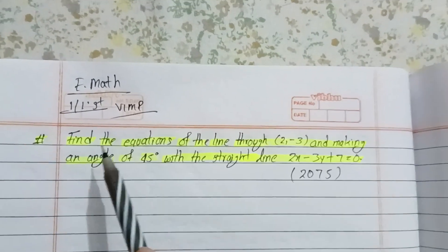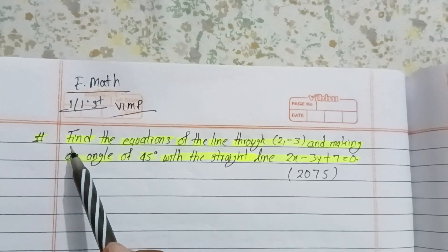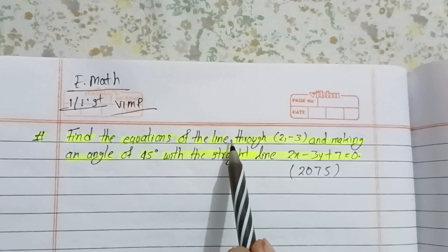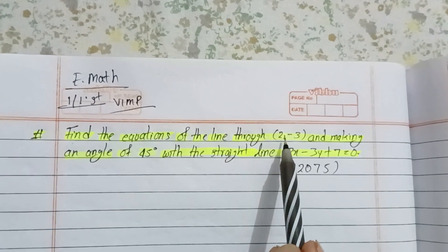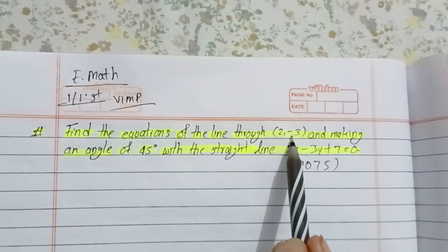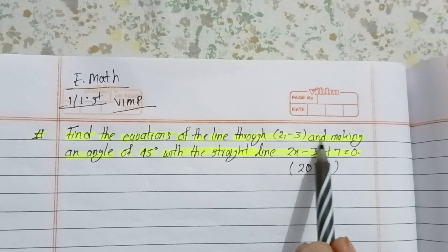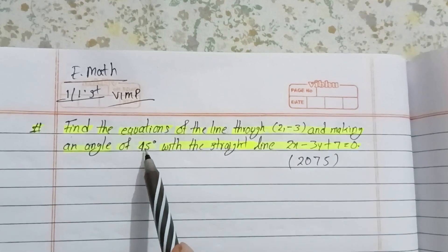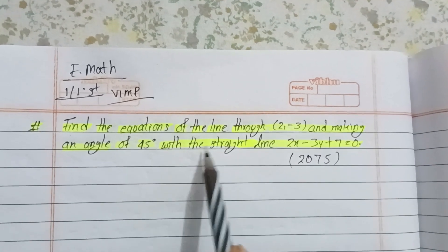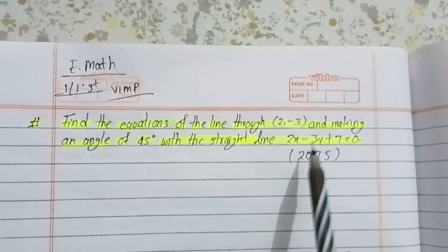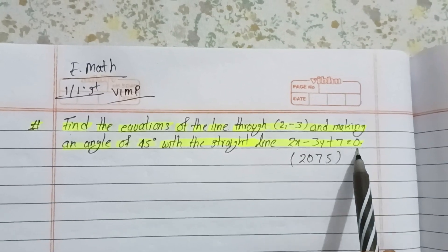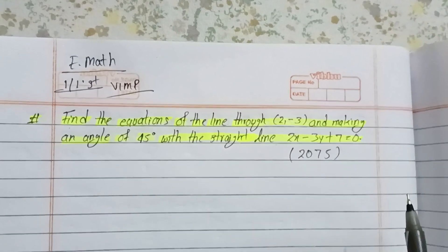Our question says: find the equations of the line through (2, -3) and making an angle of 45 degrees with the straight line 2x minus 3y plus 7 equals to 0.